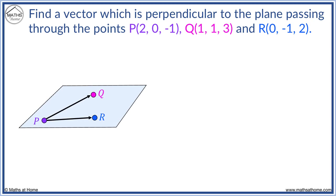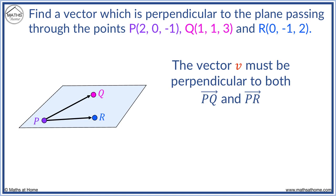Perpendicular means at right angles to. The vector that is perpendicular to the plane must be perpendicular to both the vectors PQ and PR as shown.